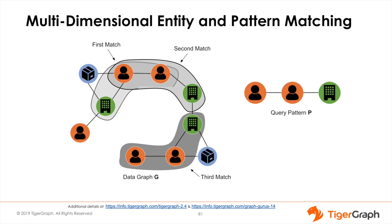Pattern matching is a process of finding subgraphs in a data graph that conform to a given query pattern. For example, the left side of the chart represents a relationship between people, companies, and products, while the right side shows a specific pattern P, where one person knows another person who works for a company. If we search the graph for the pattern P, we find three matches. Notice that two of the patterns share the same users — pattern matches can overlap. A pattern matching query for pattern P would return all three of these subgraphs.